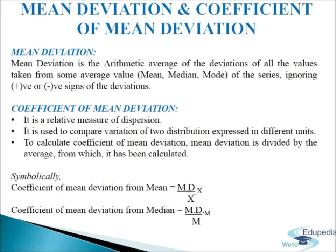Coefficient of mean deviation is a relative measure of dispersion. It is used to compare variation of two distributions expressed in different units. To calculate the coefficient of mean deviation, mean deviation is divided by the average from which it has been calculated. Symbolically, coefficient of mean deviation from mean equals MD(mean) divided by mean, where MD stands for mean deviation. Coefficient of mean deviation from median equals MDM divided by M. This is how we write coefficient of mean deviation from mean and median respectively.